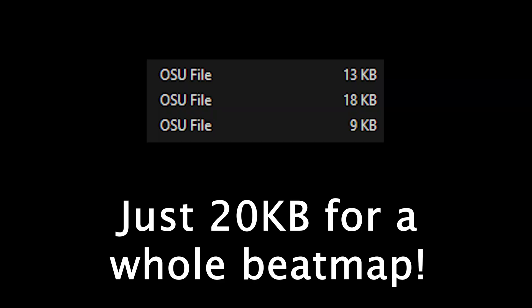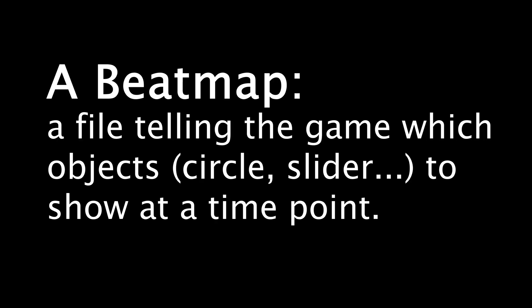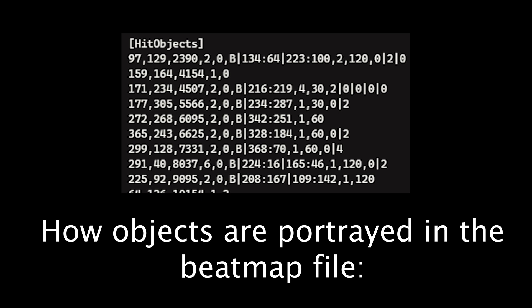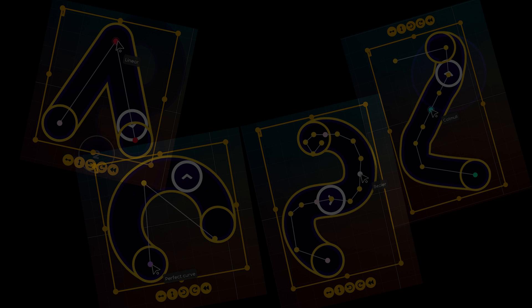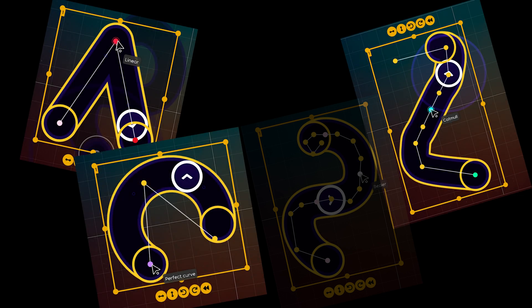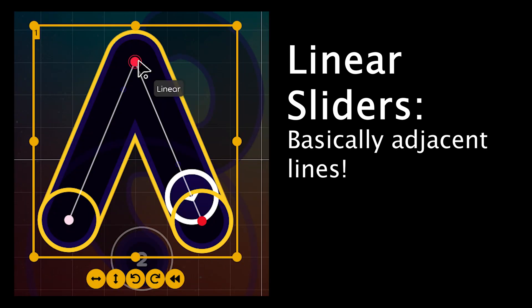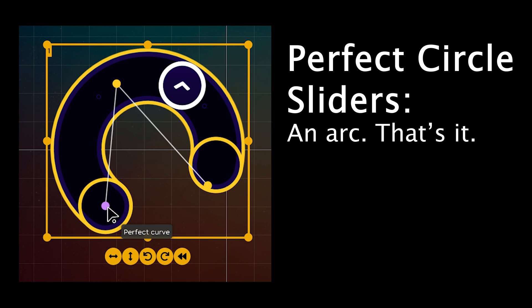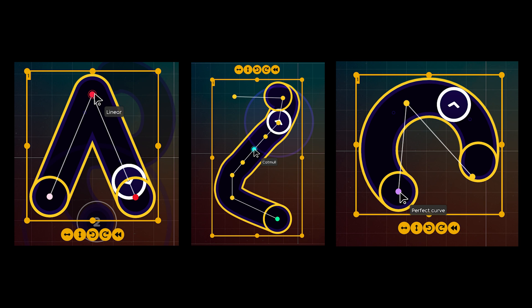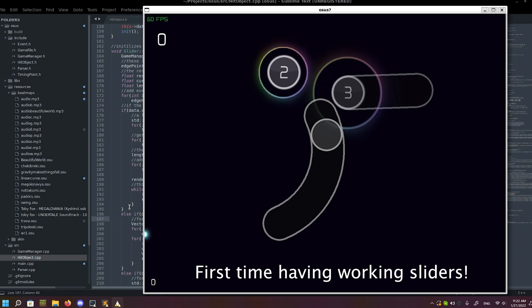Possibly to save space, Osu calculates the shape of the sliders before a beatmap is played. That means I cannot just take the data in the beatmap file and put it on the screen — the file only contains some points and the type of the slider. There are four main types of sliders in Osu: Linear, Catmull-ROM, PerfectCircle, and Bezier. Linear sliders are just lines from one point to another. Catmull-ROM sliders use the Catmull-ROM algorithm to smooth out the points and create a curvy shape with equal-distance points. PerfectCircles are just arcs defined by three points. These three types weren't much of a challenge — just basic math. After some quick debugging, I had them all working. Bezier sliders, however, are a different beast.